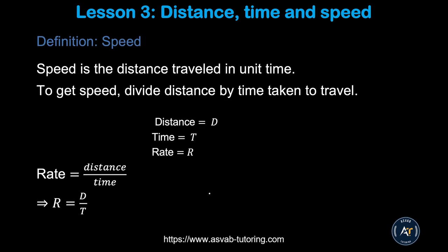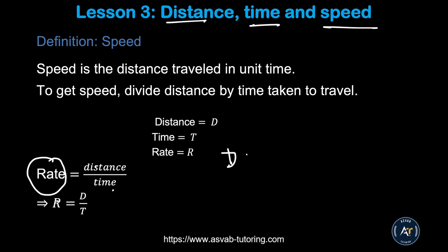The next thing we learn is a very important concept: how to find distance, time, and speed. Speed is the distance traveled in unit time. Say you are driving from New York to Washington D.C., which is around 280 miles. If it takes 5 hours to drive, how fast did you drive? That is called the rate. You find it by doing distance divided by time. The formula is: R = D/T, or equivalently D = RT. Remember this formula — you will need it many times.